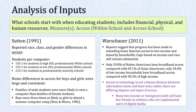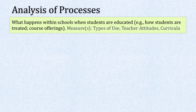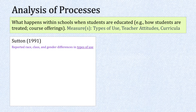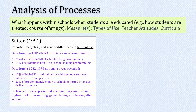A second area of analysis focused on processes — what happens within schools when students are educated, how they are treated, what courses they are offered. Measures around processes include types of use, teachers' attitudes, and curricula. Sutton reported race, class, and gender differences in types of use: only 7% of students in Title I schools were taking programming versus 14% of students in non-Title I schools. She also reported that only 13% of high SES, predominantly white schools reported intensive drill and practice versus minority schools. Girls were underrepresented at elementary, middle, and high school level programming, game playing, and before and after school use.